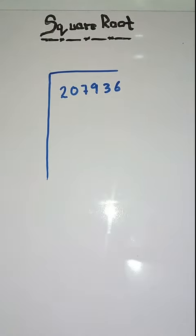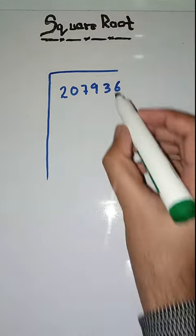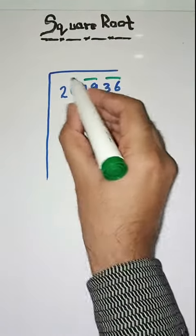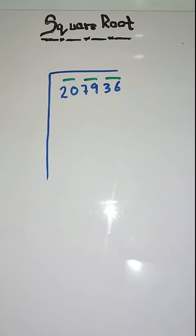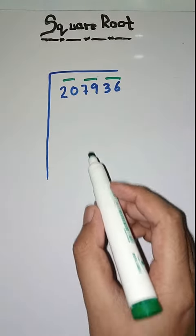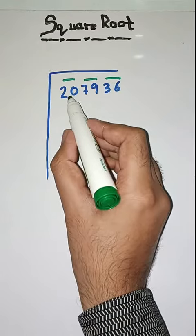So first step is we have to make pairs from right to left like this: 36, 79, and 20. So according to these pairs, we came to know that first we have to solve 20.